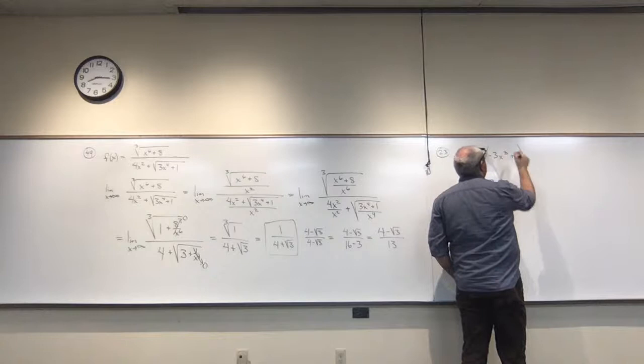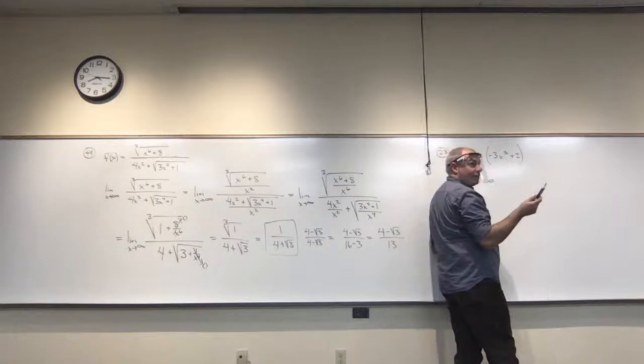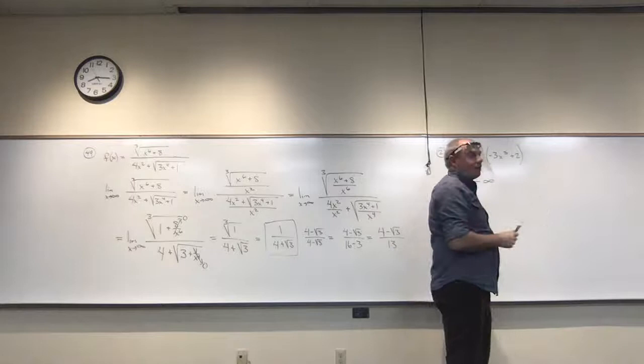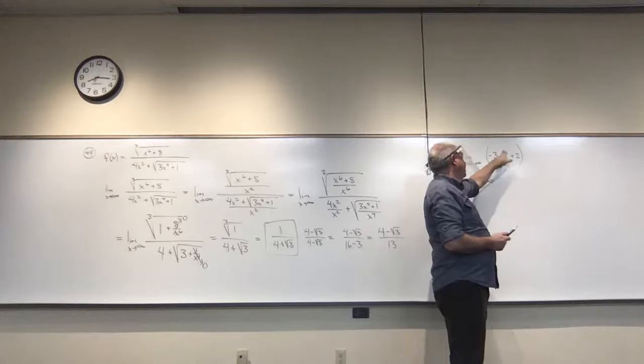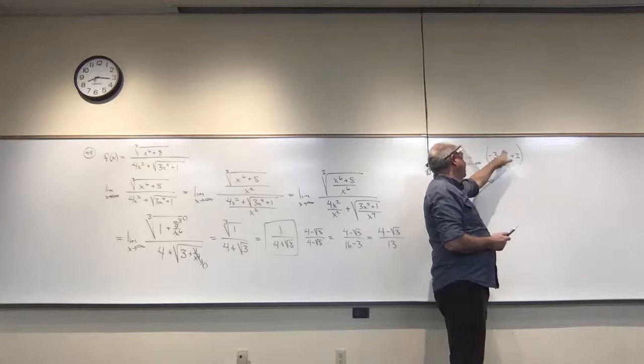If it were to the third power instead, then negative infinity cubed is still negative infinity, times negative three gives positive infinity, plus two is still positive infinity. So if it were an odd power this would be positive infinity, but since it's an even power the result is negative infinity.